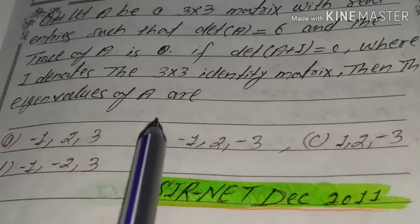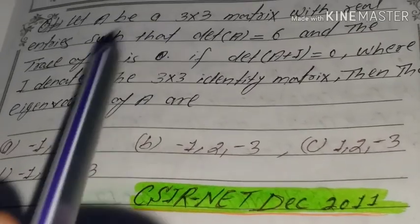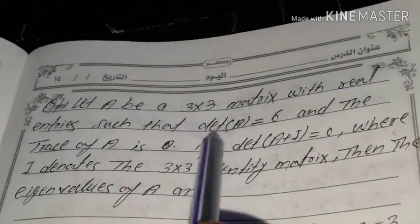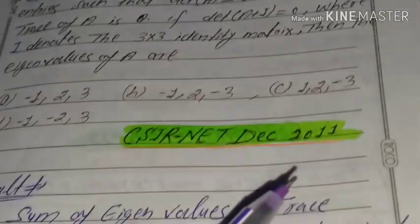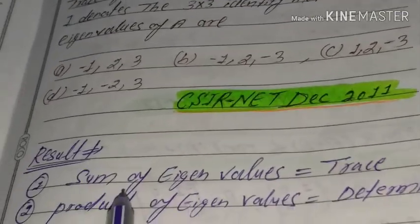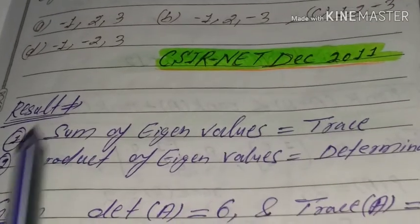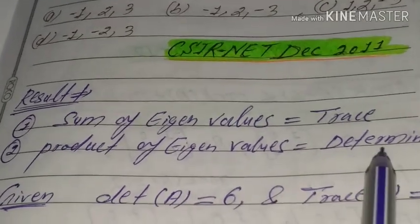This is a 3x3 matrix with determinant 6 and trace 0. The result is sum of eigenvalues is equal to trace and product of eigenvalues is equal to determinant.